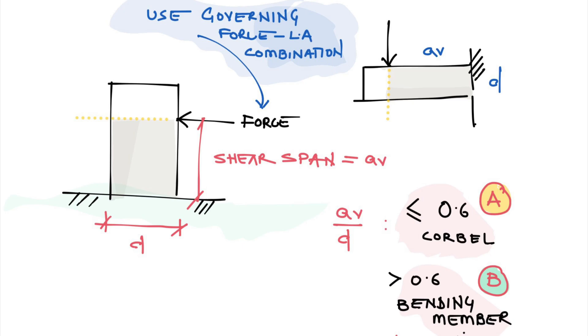Corbels are reinforced structural members or short structural projections used to transfer vertical and horizontal forces from beams to columns.